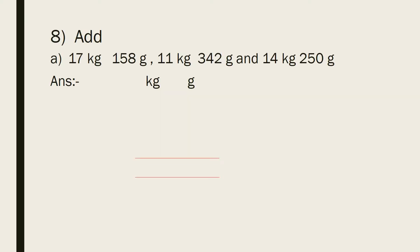Question number 8, Part A. The three weights given are: 17 kilograms 158 grams, 11 kilograms 342 grams, and 14 kilograms 250 grams. First of all, for adding, we will arrange them. For arranging, first we write the bigger unit, then we write the smaller unit. Here, the bigger unit is kilogram and the smaller unit is gram.